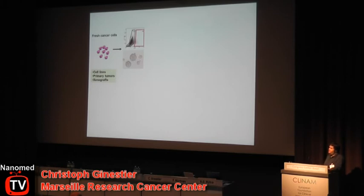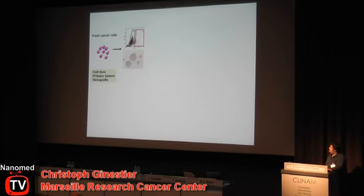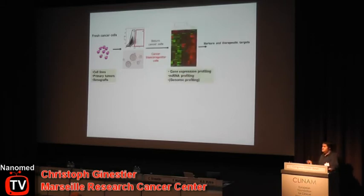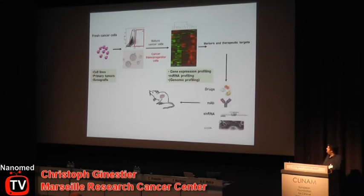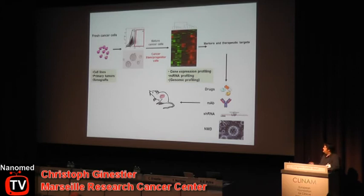The strategy we follow in the lab is to use cells from cell lines, primary tumors, and xenografts, sort the cells based on the aldefluor assay, and compare the cancer stem cell gene expression signature to the mature cells, trying to identify potential therapeutic targets. We then use drugs or different therapeutic strategies and test them directly in animals using primary tumor xenografts.